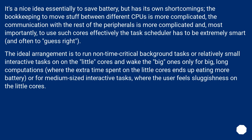It's a nice idea essentially to save battery, but has its own shortcomings. The bookkeeping to move tasks between different CPUs is more complicated, and communication with the rest of the peripherals is more complicated. Most importantly, to use such cores effectively the task scheduler has to be extremely smart and often guess right. The ideal arrangement is to run non-time-critical background tasks or relatively small interactive tasks on the little cores, and wake the big ones only for large long computations — where extra time on the little cores ends up eating more battery — or for medium-sized interactive tasks where the user feels sluggishness on the little cores.